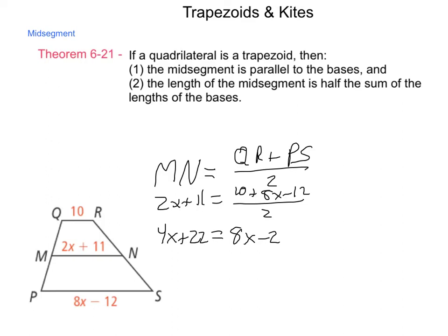Going through to solve, using the subtraction property of equality I get 22 equals 4x − 2. By the addition property of equality, 24 equals 4x. Then using the division property of equality, x equals 6.